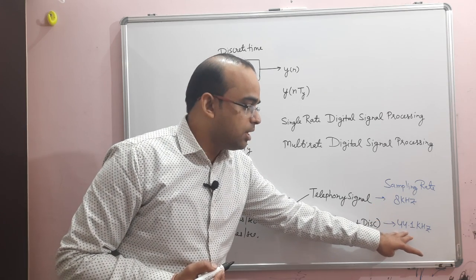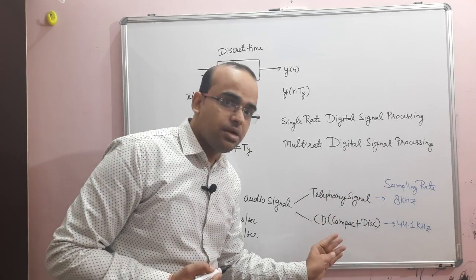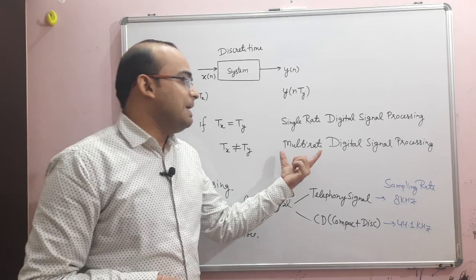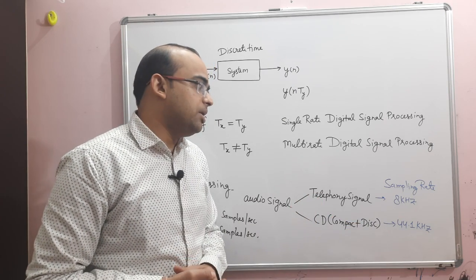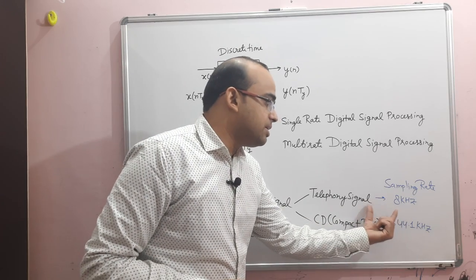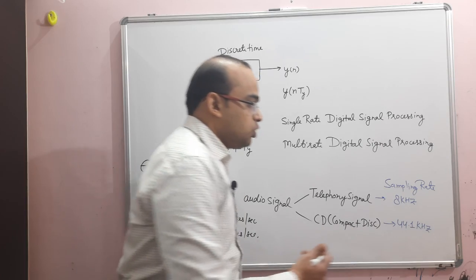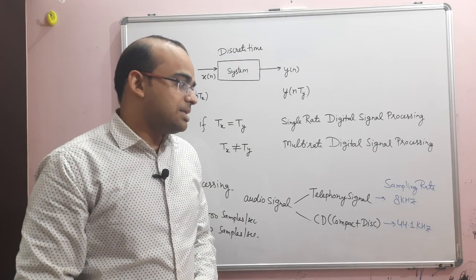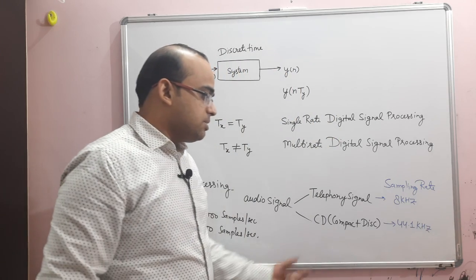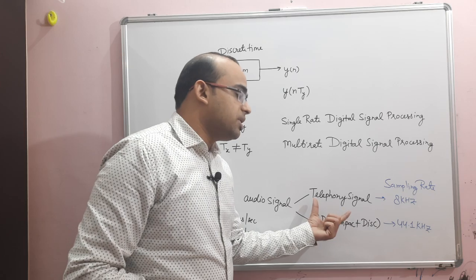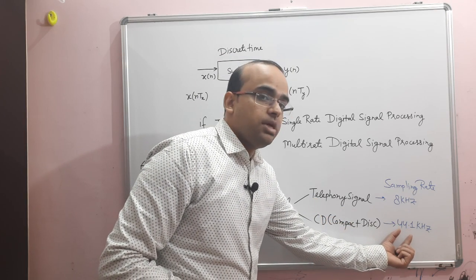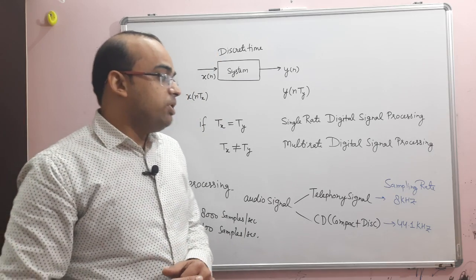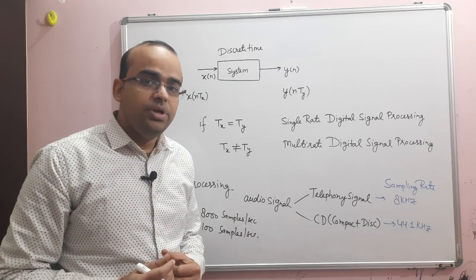Or in reverse, if a CD signal processed at 44.1 kHz needs to be sent over a telephone line, in that case we need to convert the sampling rate. The system that processes both telephone signals and CD signals together is called a multi-rate system. To store the telephone signal in a CD, we need to increase the sampling rate from 8 kHz to 44.1 kHz — this is called up-sampling. The reverse is called down-sampling.